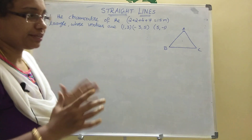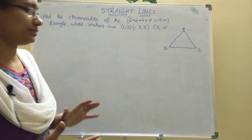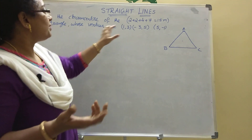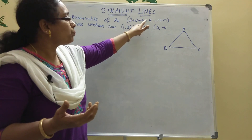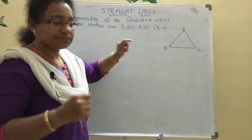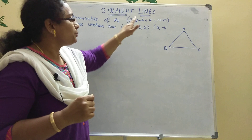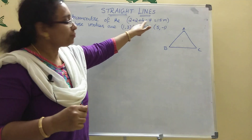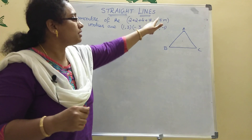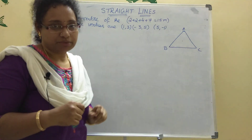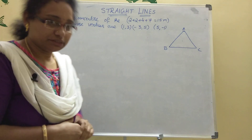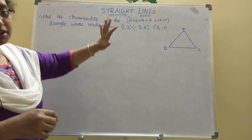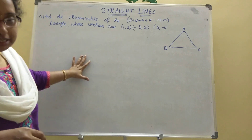Today I am explaining the Straight Lines chapter. In board exams, how many important sums are there? See here: 2 marks — 2 sums = 4 marks; 1 sum of 4 marks; 7 marks — 1 sum. Total equals 15 marks in the board exam for AP and Telangana.